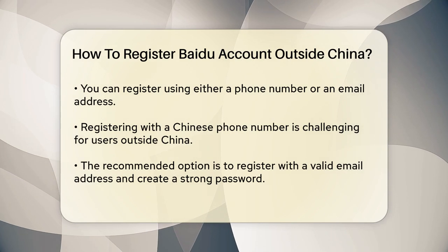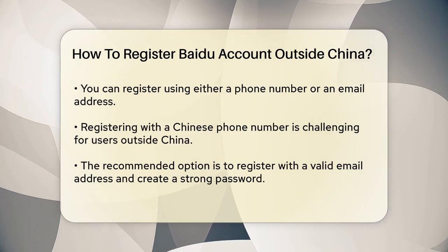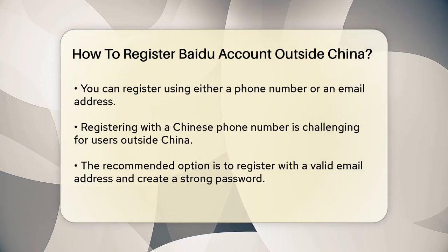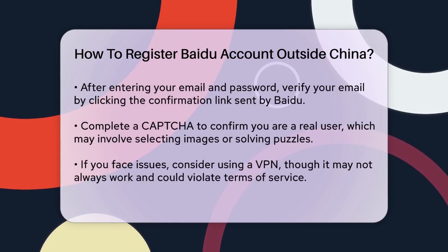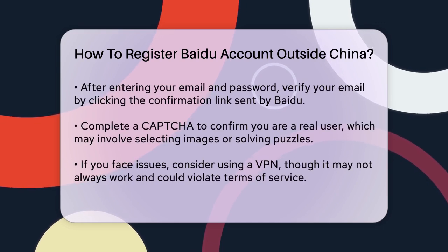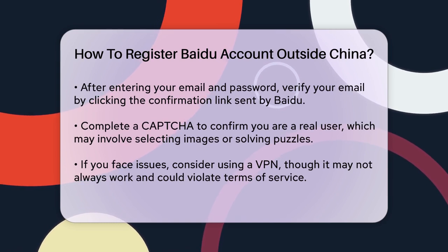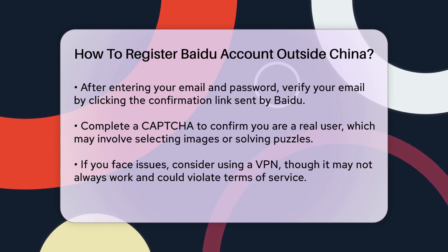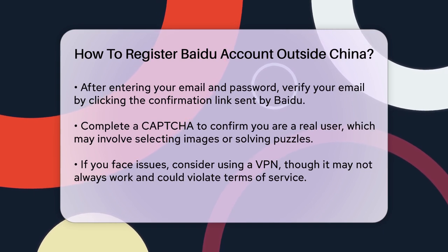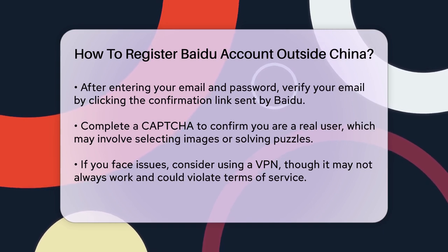After entering your email and password, you'll need to verify your email address. Baidu will send a confirmation email to the address you provided. Open the email and click on the verification link to activate your account. Another step involves filling out a CAPTCHA to ensure you're a real user, which might require you to recognize and select certain images or complete a simple puzzle.